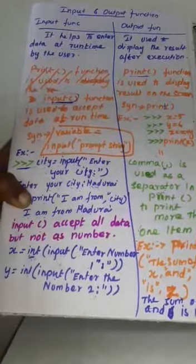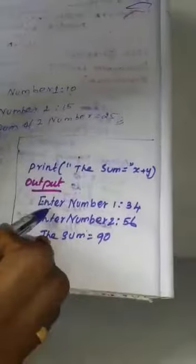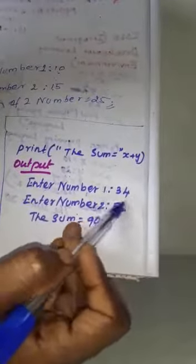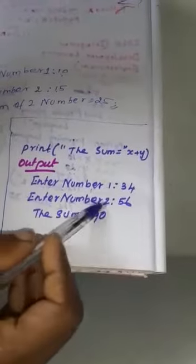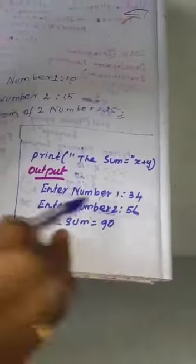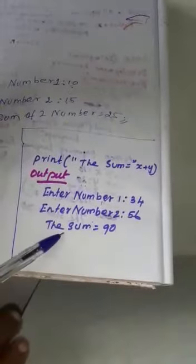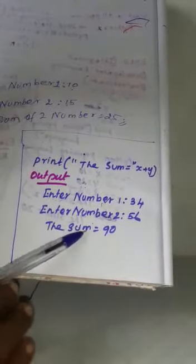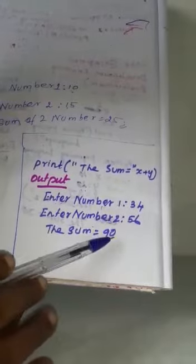What is the output? What is the output that will be displayed? Here, output: enter number 1. Next, you type the number. Next, enter number 2. You type another number. Next, press the enter key. The following output will be displayed on the screen. The sum equal to 90.